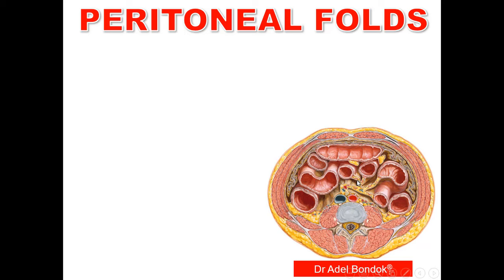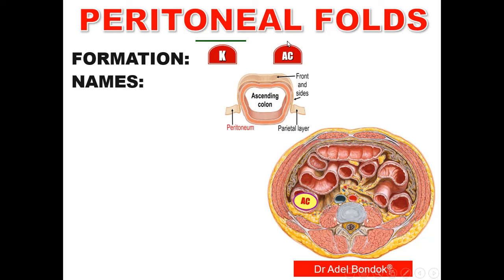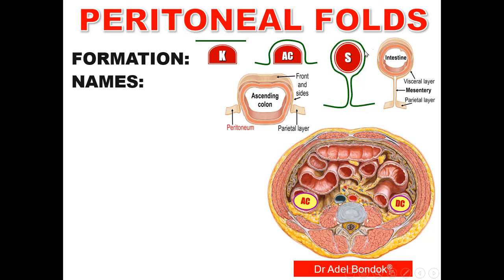Regarding the peritoneal folds which suspend the organs from the posterior abdominal wall — their formation and names. Some organs are retroperitoneal, covered only anteriorly with peritoneum, like the kidney — they don't have peritoneal folds. Other retroperitoneal organs like the ascending colon and descending colon are covered in front and the sides, so they also don't have folds. Other organs like the small intestine are completely covered with peritoneum and suspended from the posterior abdominal wall by a fold called the mesentery.